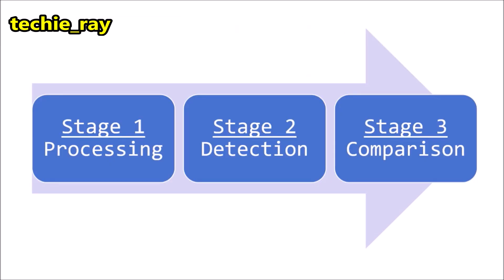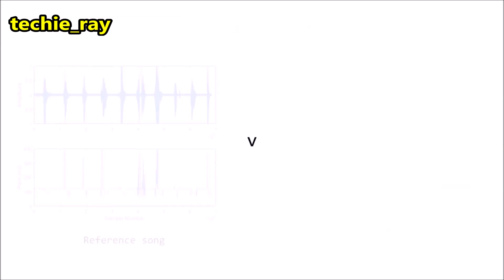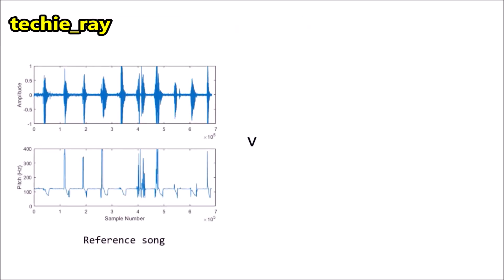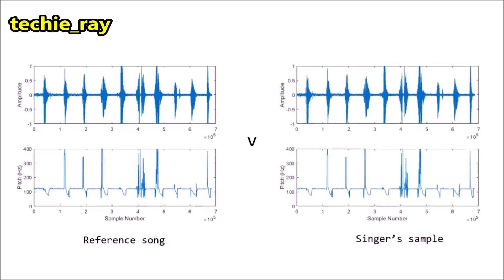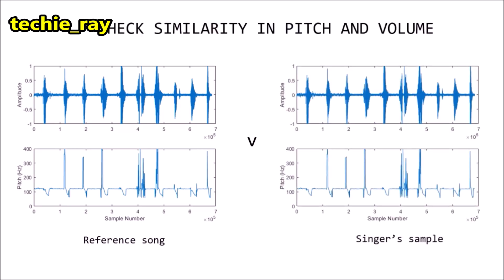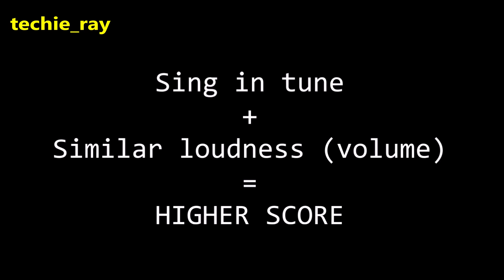Finally, in stage 3, the algorithm compares the pitches and volume between the reference song and our singing, and finds the average score. Basically, you get a high score if you sing in tune and at a similar loudness. The app then prints and reads out the score on the screen, kind of like a karaoke machine — well, that's the point, right?